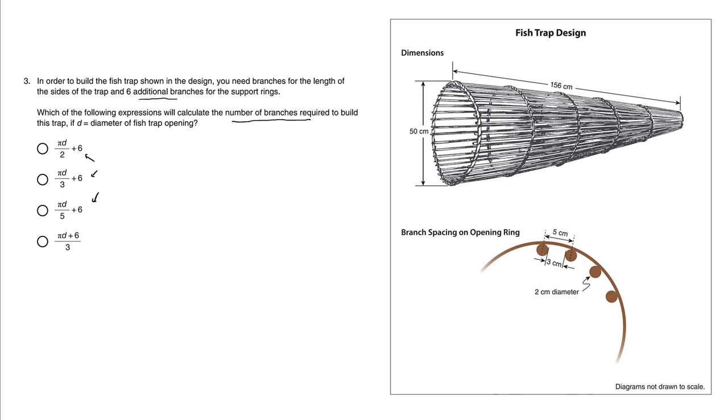Focusing on the circle, recall that the formula for circumference of a circle is C equals πD - pi times diameter. Now, if we know the circumference, can we figure out how many branches there are? According to this diagram, each branch is five centimeters apart from branch to branch.